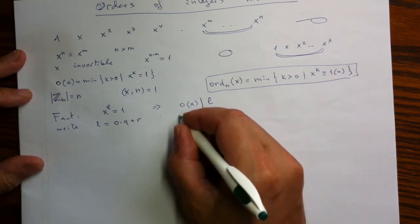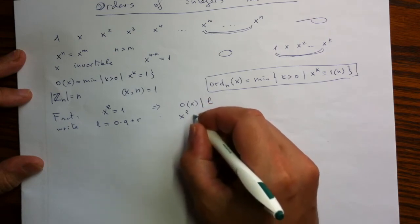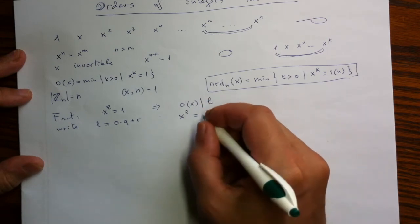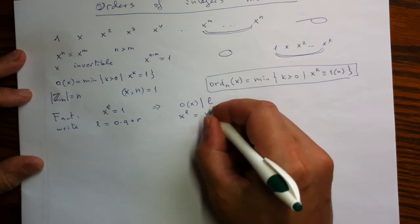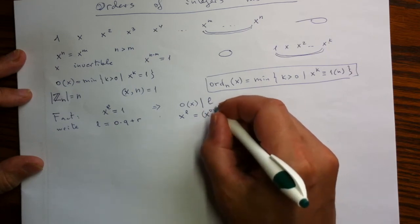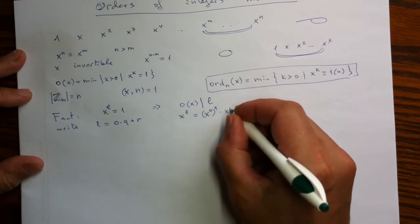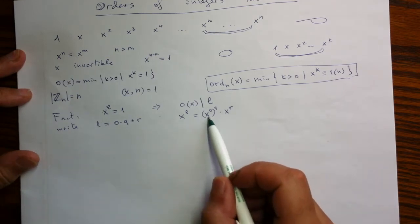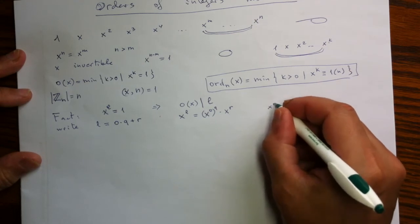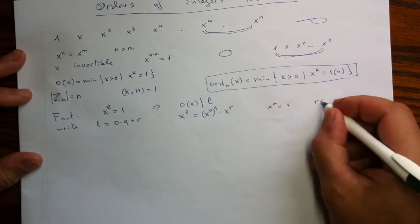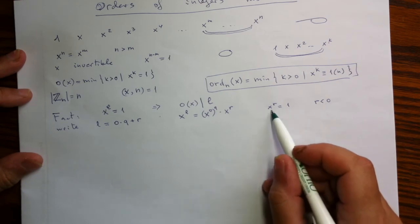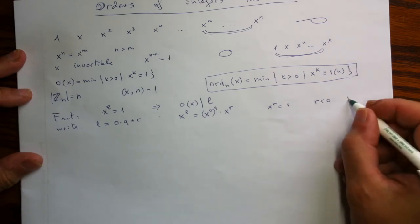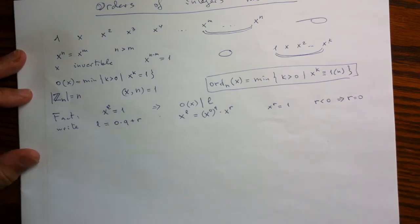And then look what happens with the powers. So then the power l, which is 1 given, can be rewritten as the power of the order to the power q times the power which is r. This is 1 by the definition of the order, so that has to be 1. But since r is less than O, r has to be 0. And that is just saying that the order divides in this exponent l neatly.